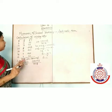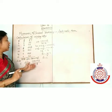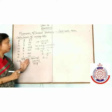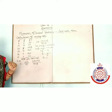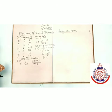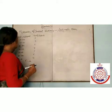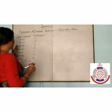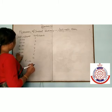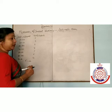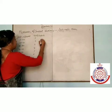Whenever a missing frequency is given, we can easily find it using the direct method. Now, sometimes in continuous series, the frequency is also missing. Here, the class intervals are 10–20, 20–30, 30–40, 40–50, 50–60 (frequency missing), 60–70, and 70–80.